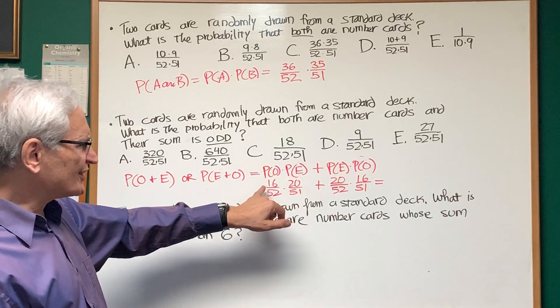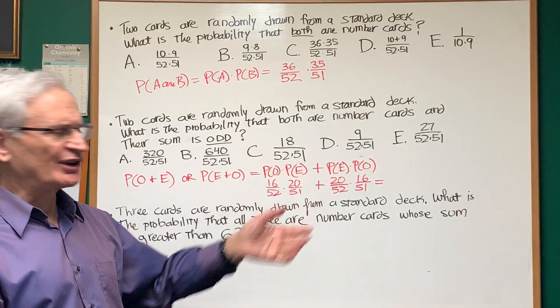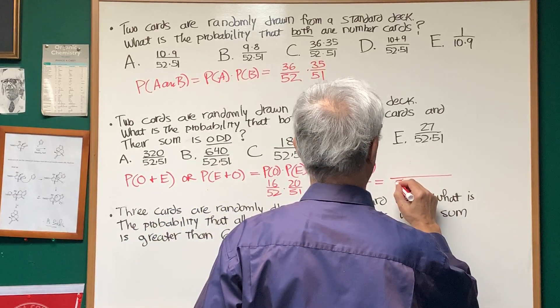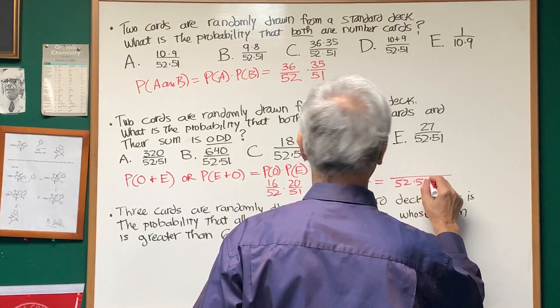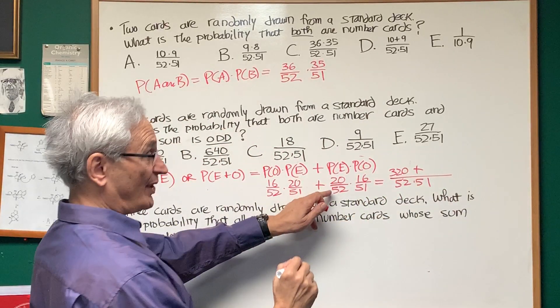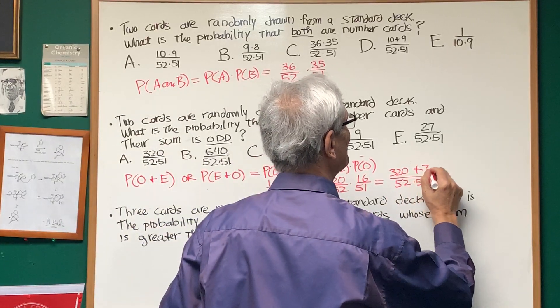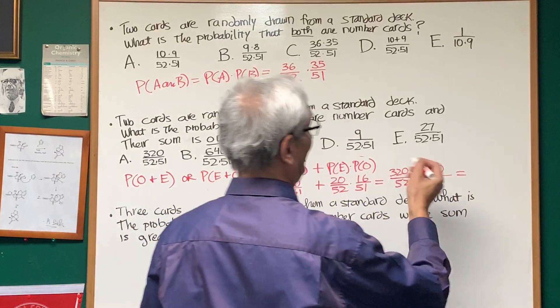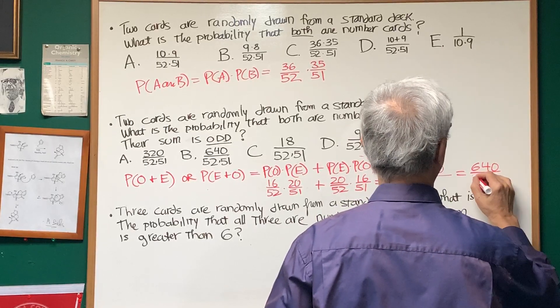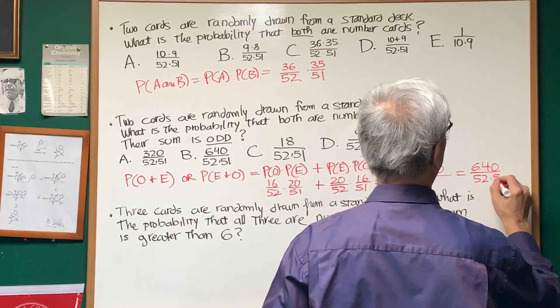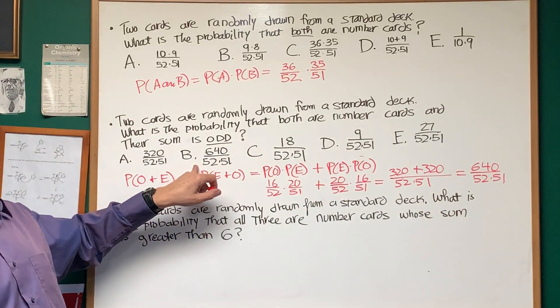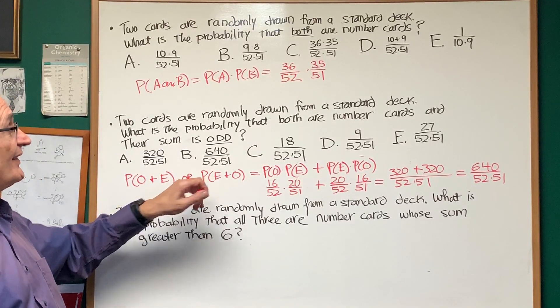Okay. So if we multiply these across, what's 16 times 20? 320. We'll combine this over the common denominator, 52 times 51. 16 times 20 is 320. And 20 times 16 is 320. So my final solution is 640 over 52 times 51. And if I look at my selection of answers here, that would be choice B. Okay. And there we are.